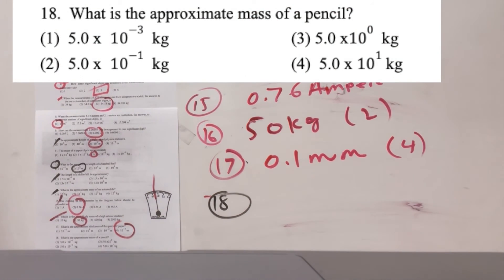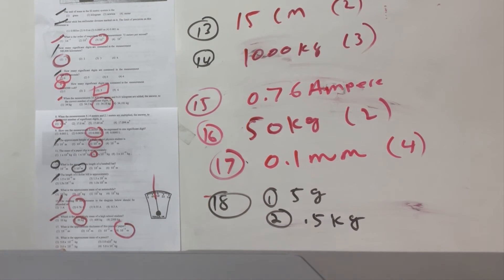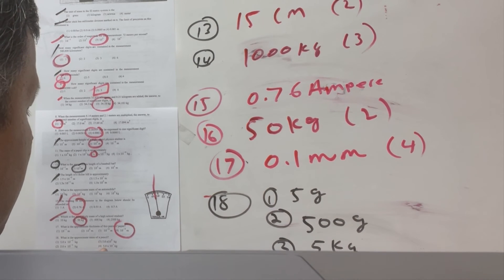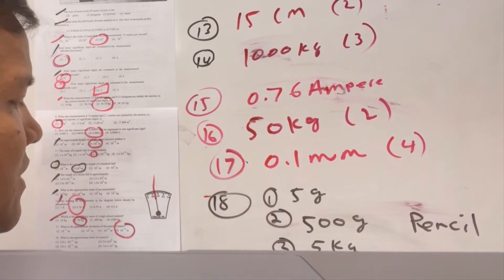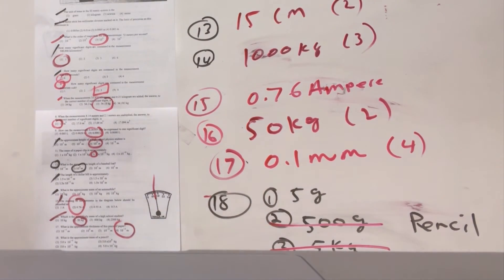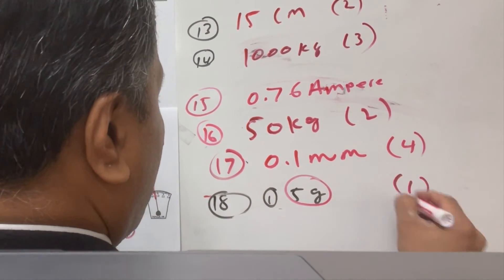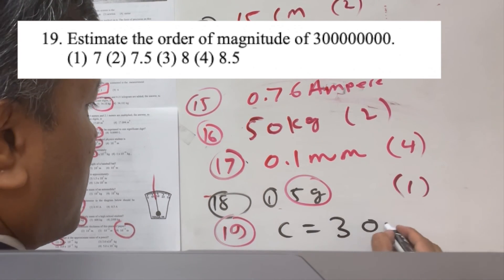Number eighteen: the approximate mass of a pencil. Options are 5 grams, 0.5 kilograms (500 g), 5 kilograms, and 50 kilograms. I've never seen a 50 kg, 5 kg, or 500 g pencil. A pencil is about 4 to 6 grams, so 5 grams — option number one.